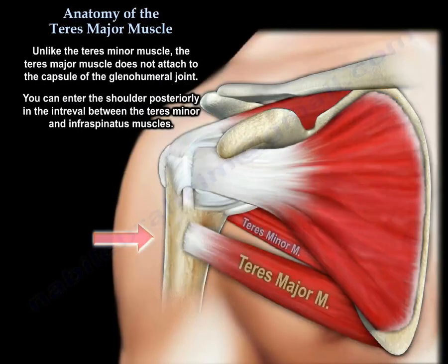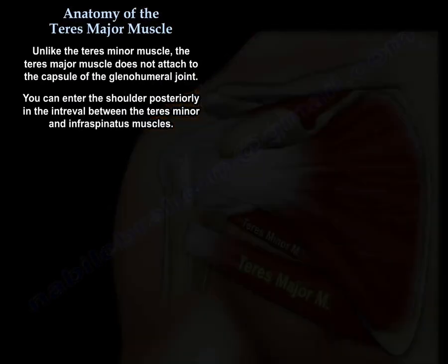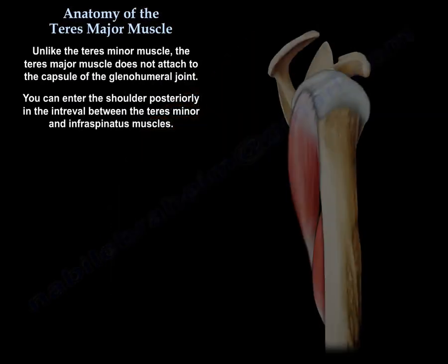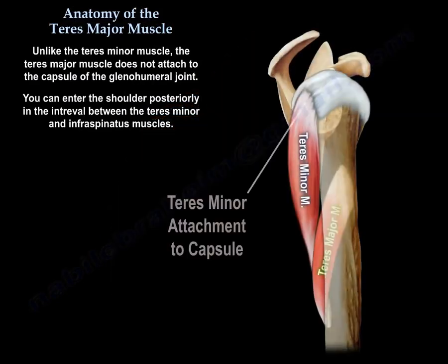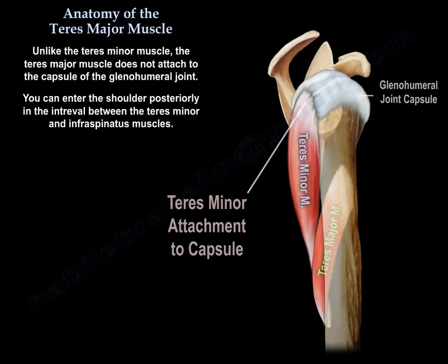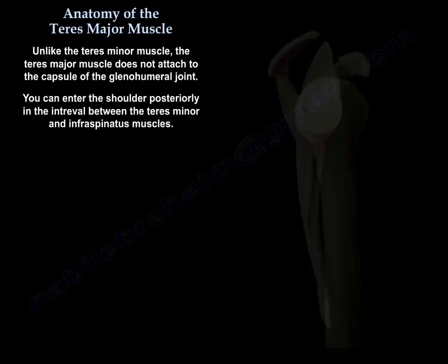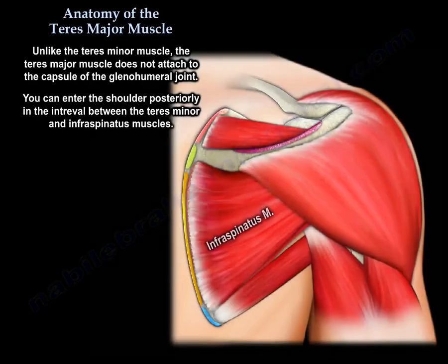Unlike the teres minor muscle, the teres major muscle does not attach to the capsule of the glenohumeral joint. So you can enter the shoulder posteriorly in the interval between the teres minor and the infraspinatus.